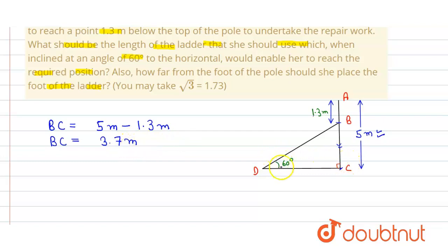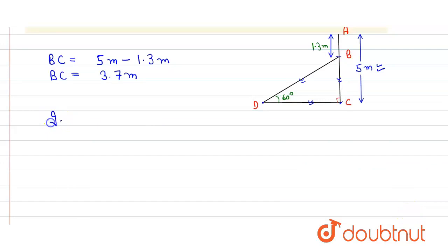Here this angle is 60 degrees. We have to find the length of the ladder, which is BD, and the distance of the foot of the ladder from the foot of the pole, which is DC. We use the trigonometric ratio in the right angle triangle BCD.